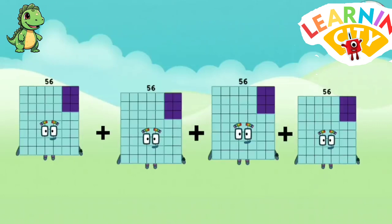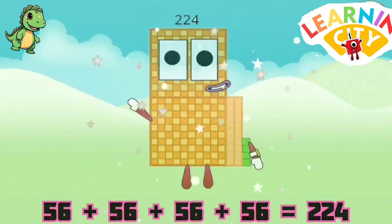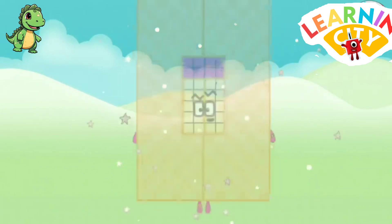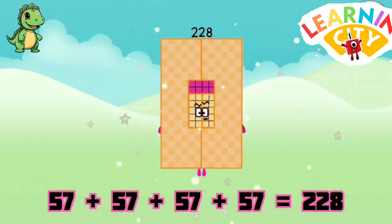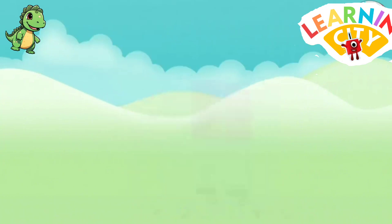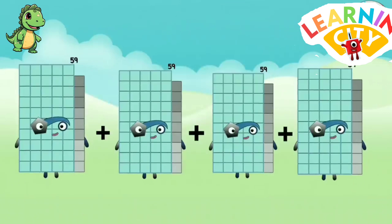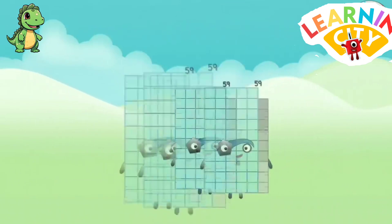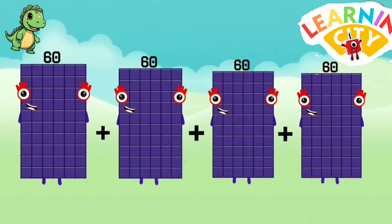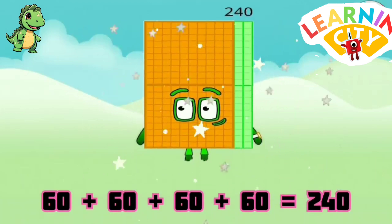56 plus 56 plus 56 plus 56 equals 224. 57 plus 57 plus 57 plus 57 equals 228. 58 plus 58 plus 58 plus 58 equals 232. 59 plus 59 plus 59 plus 59 equals 236. 60 plus 60 plus 60 plus 60 equals 240.